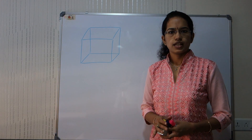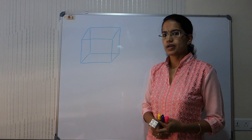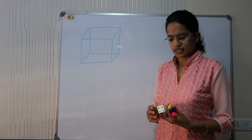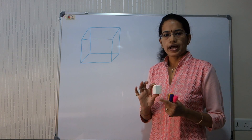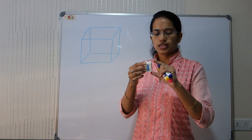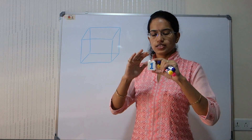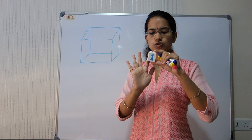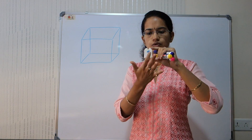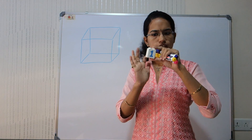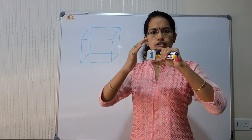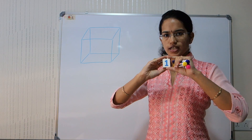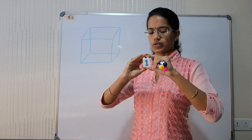Hello, welcome to today's class. Today we would be understanding the problems related to the concept of dice. I have this sample in my hand. As we can see, we have 6 faces: 1, 2, 3, and 4 on the 4 sides and top and bottom. So there are 6 faces in a dice that we need to understand.